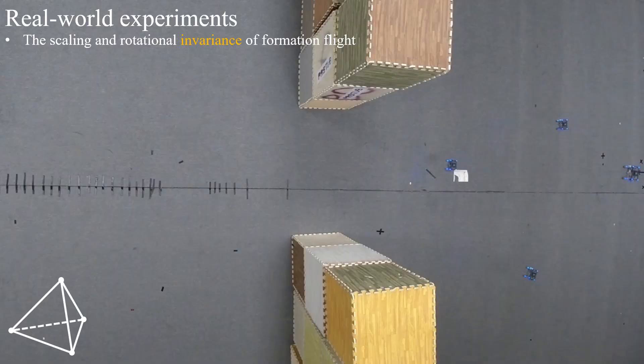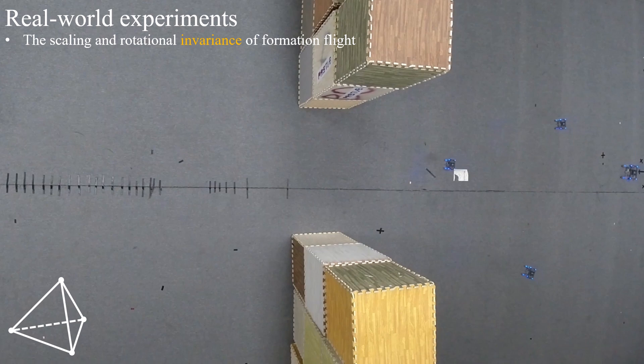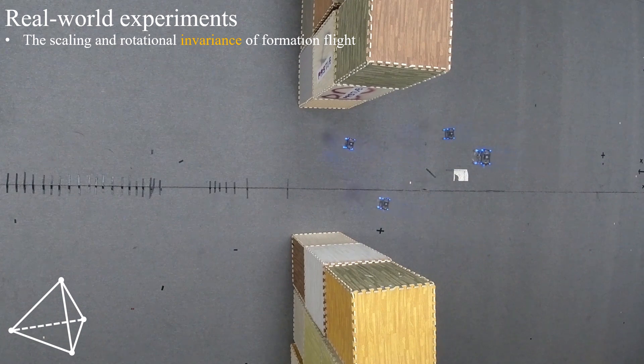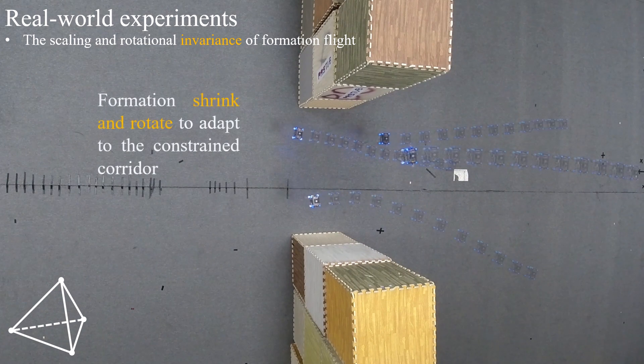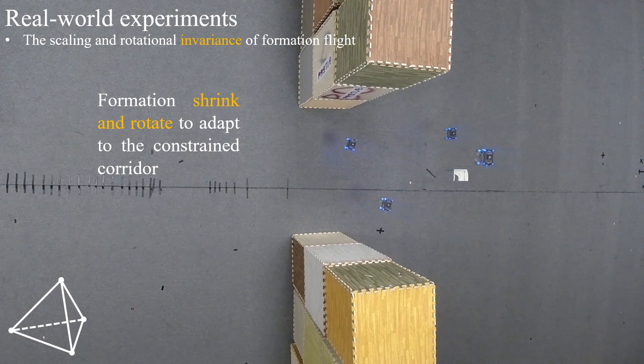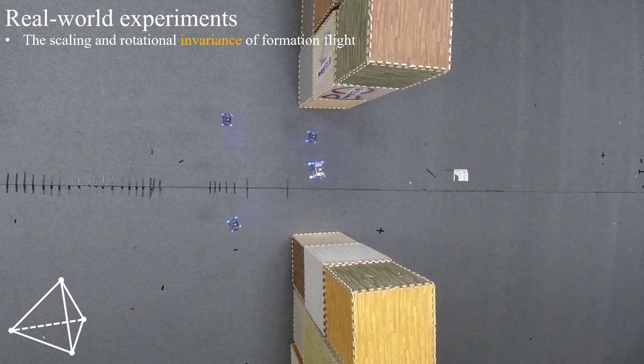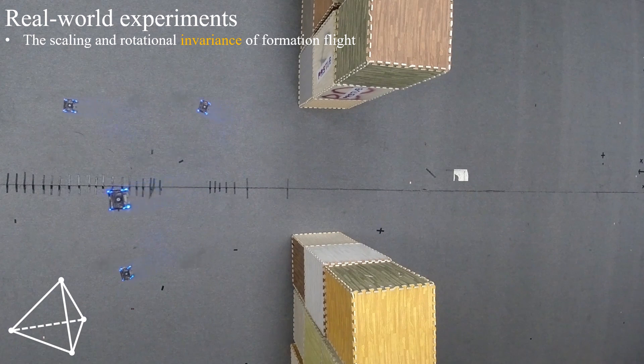Finally, four quadrotors in a 3D regular tetrahedron formation manage to pass through a narrow corridor safely. During the flight, the swarm adaptively shrinks and rotates the formation shape in response to environmental changes. This test proves that the scaling and rotational invariance provides more flexibility for formation flights in constrained spaces.